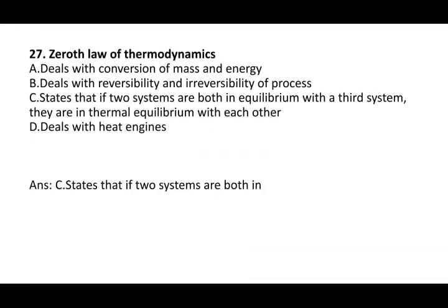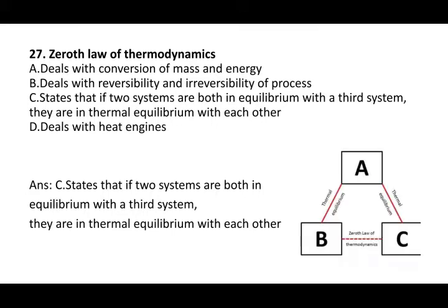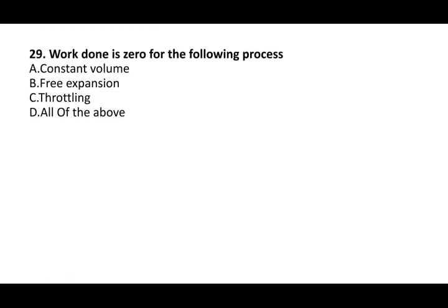Next question: the zeroth law of thermodynamics states that if two systems are both in equilibrium with a third system, they are in thermal equilibrium with each other. Next question: in an isothermal process, the internal energy of the gas molecules remains constant. Next question: work done is zero for the constant volume process, free expansion, and throttling process — so the answer is all of the above.